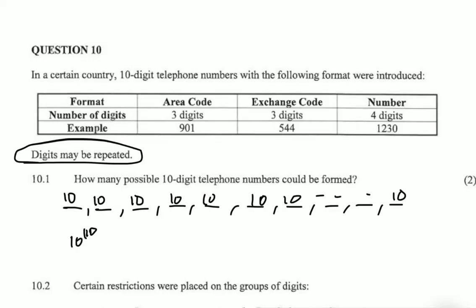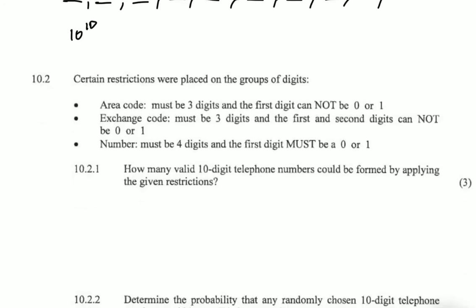If the digits were not repeated, we would have 10 factorial, but that's for another day. Question 10.2 says certain restrictions were placed on the groups of digits. For the area code, it must be three digits and the first and second digits cannot be zero or one. For the exchange code, it must be three digits and the first and second digits cannot be zero or one.